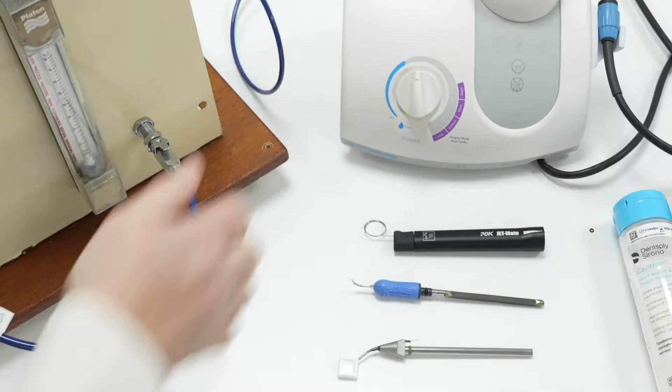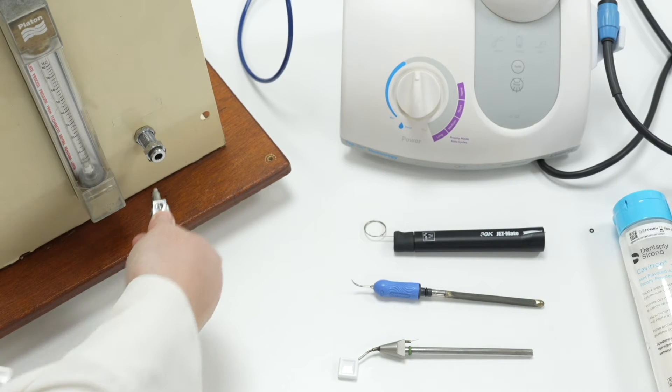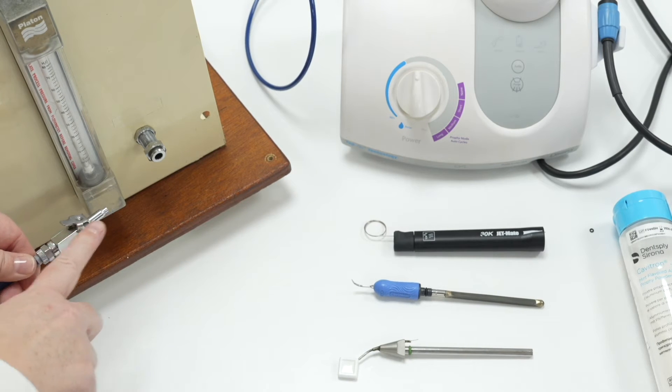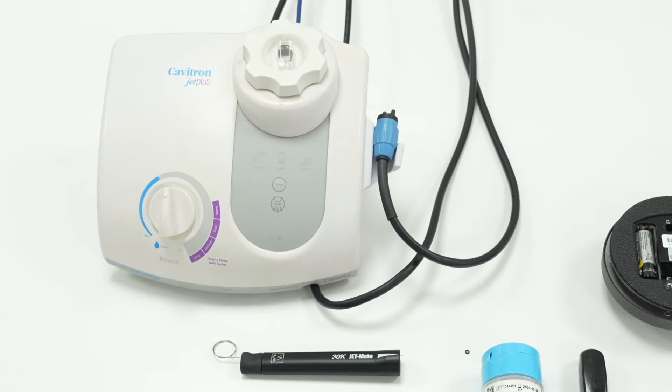To take these lines out firstly disconnect the male ADEC connector and the female ADEC connector and then simply press down the ring to release the line and pull the line out. To switch the Cavitron Jet Plus on the button is underneath the front of the unit.